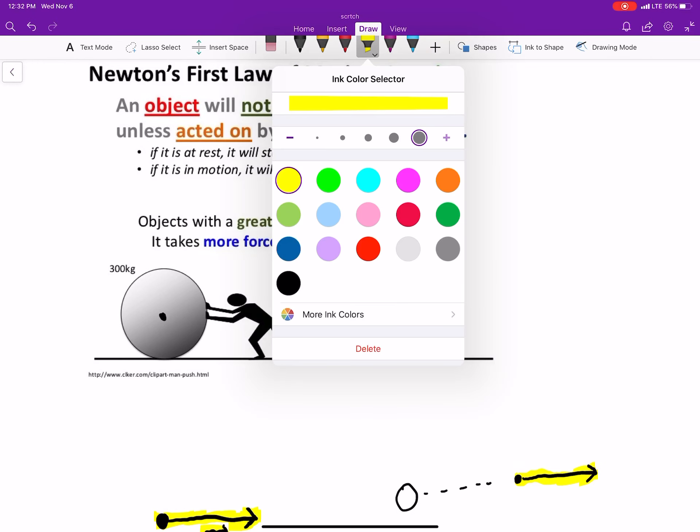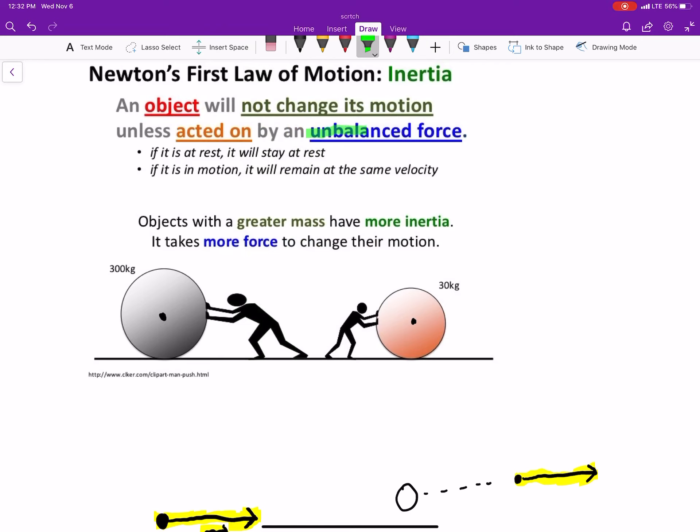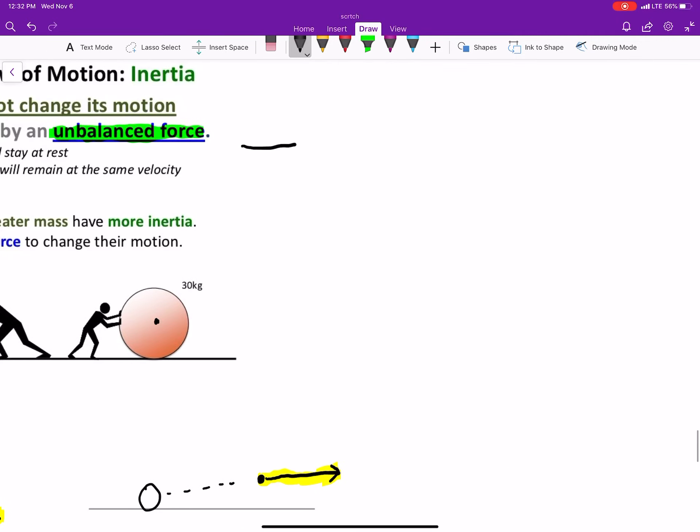It's also important that we understand what is meant by unbalanced forces. So let's look at a table. Let's say I have a table and I have a ball right here. Now the ball is not going to just move by itself unless I push it or something. If it's just sitting there, you know, it's not going to bounce up and down on the table, it's not going to roll around, it's just going to stay there. And that kind of matches what we see every single day. Does that mean there's no forces acting on it? No, there is.